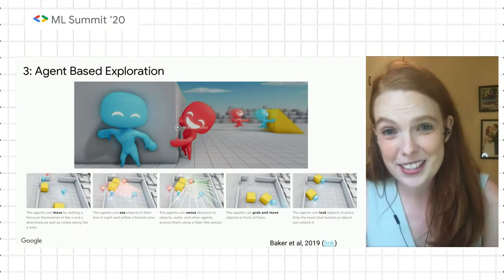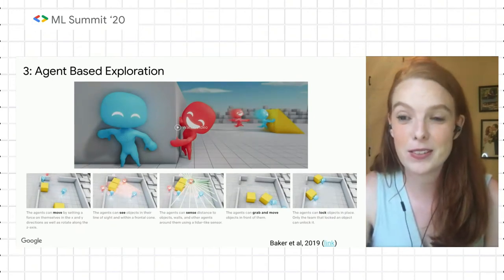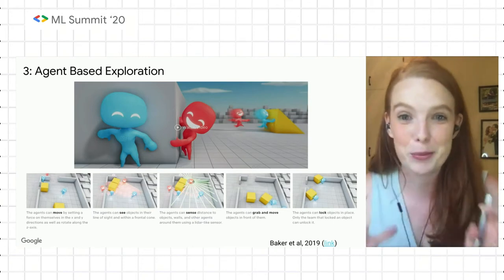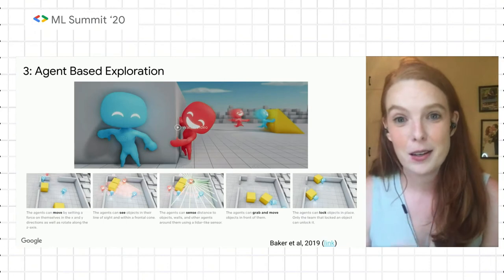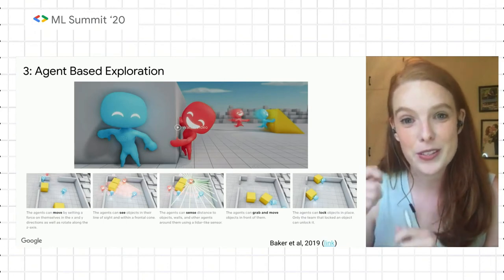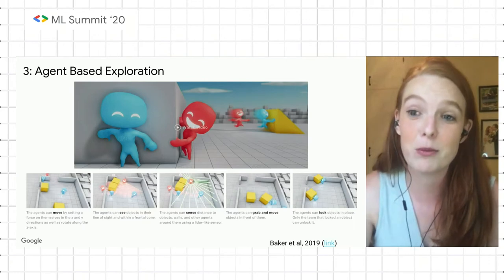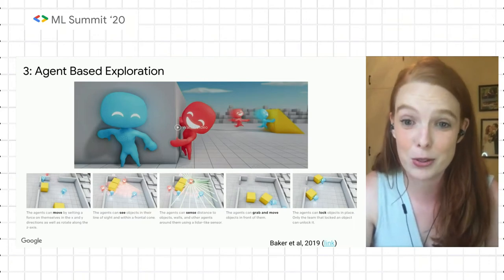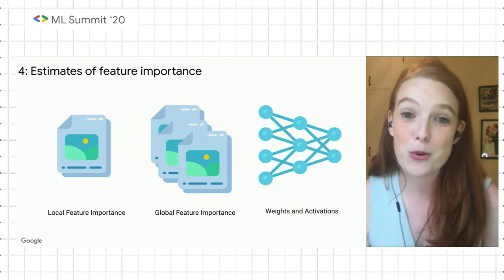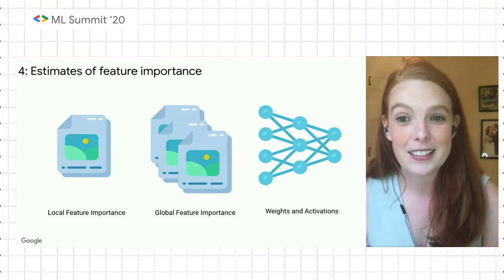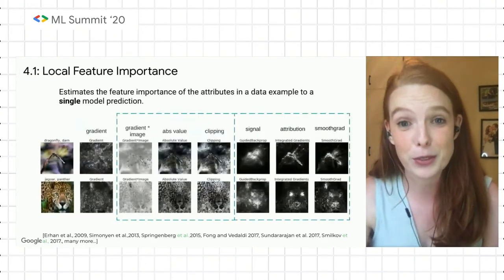The third direction is agent-based exploration. This is an interesting direction because often it's overlooked as an interpretability method. But in fact, a lot of reinforcement learning methods which show the interaction of an agent learning to navigate an environment can teach us a lot about the model decision boundary that a deep neural network learns. The fourth — and this is what we'll talk about more during this presentation — is estimates of feature importance.